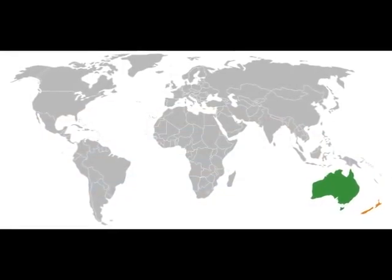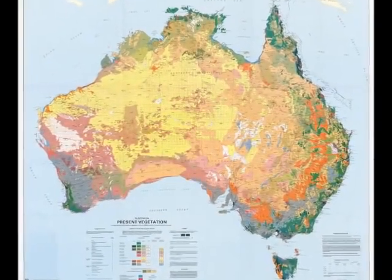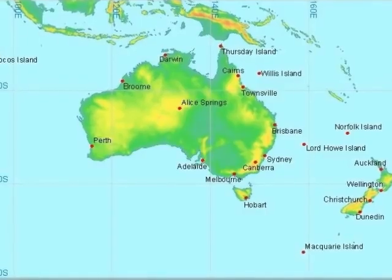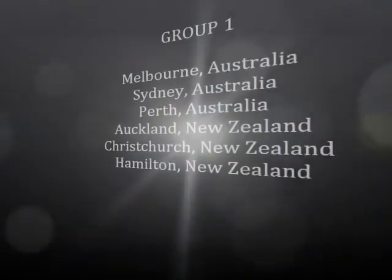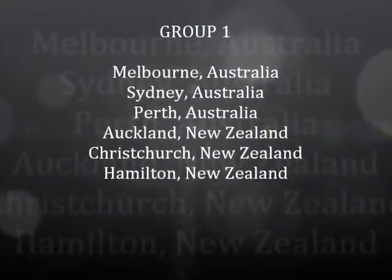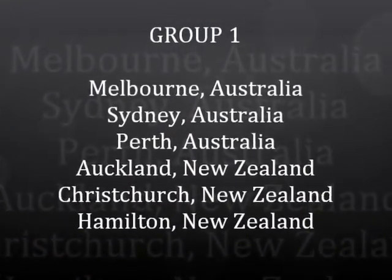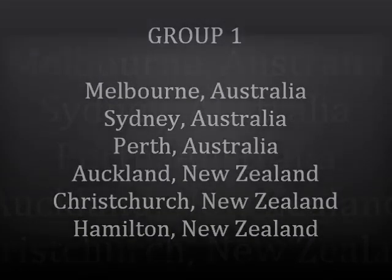Now we are going to look at two specific groups of cities. The first group is from the area around Australia, including New Zealand — we'll call this Group 1. Group 1 includes Melbourne, Australia; Sydney, Australia; Perth, Australia; Auckland, New Zealand; Christchurch, New Zealand; and Hamilton, New Zealand.